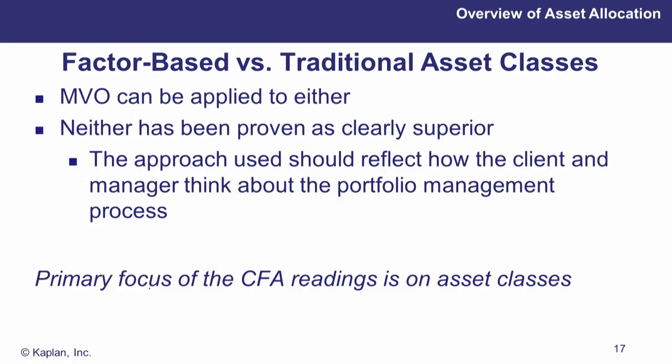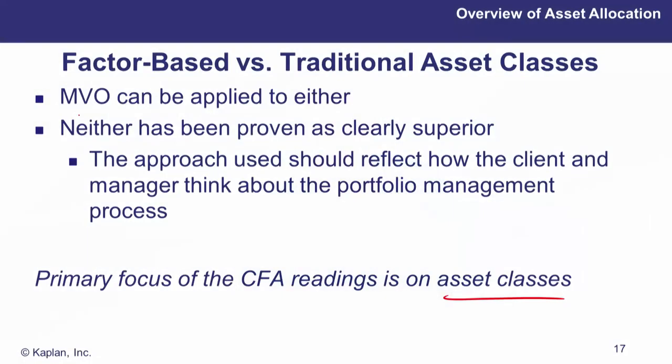The main focus of the CFA exam is on exposure to traditional asset classes. Although awareness of factor-based asset allocation is worthwhile, fewer exam questions are expected on that topic. We'll shortly be looking at mean-variance optimisation to decide the optimal asset allocation — usable for both factor-based and traditional asset classes. In the real world, neither approach is superior; the best approach should reflect how the client and portfolio manager think about investment risk. Level 3 will primarily examine traditional asset allocation measures.